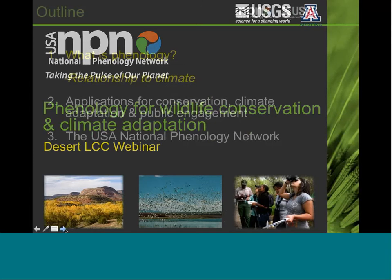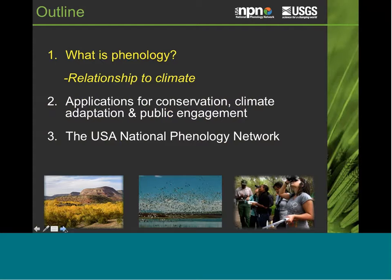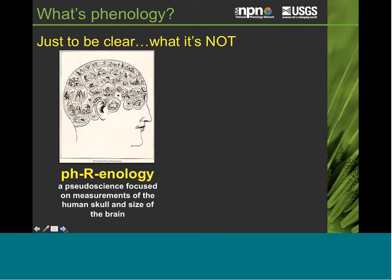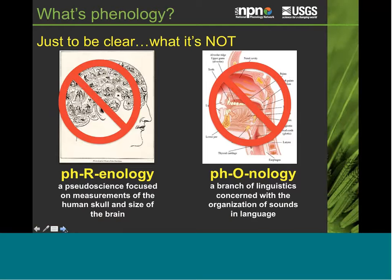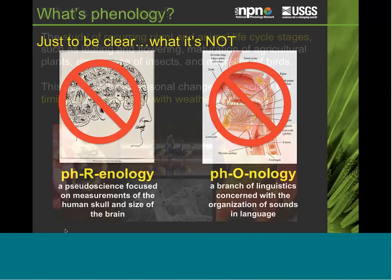First, just to be clear, this is what phenology is not. It is not phrenology, a science focused on measurements of the human skull and brain size, nor is it phonology, a branch of linguistics concerned with the organization of sounds and language. More seriously, phenology is the study of recurring plant and animal life cycle stages. This can include leafing and flowering, maturation of agricultural plants, emergence of insects, migration of birds, and other seasonal changes — especially the timing and relationship with weather and climate.